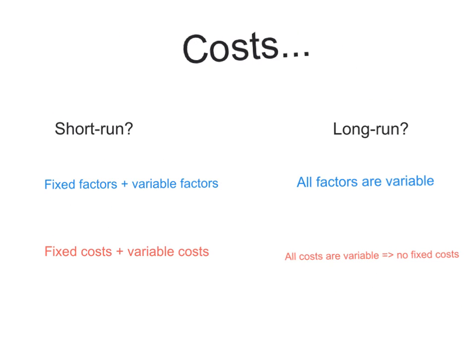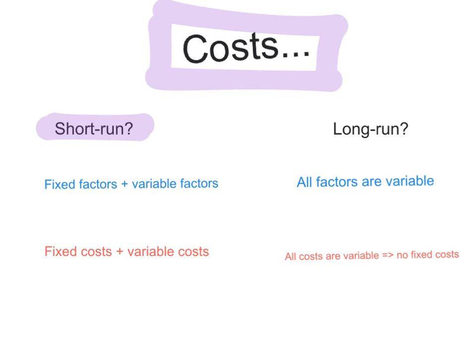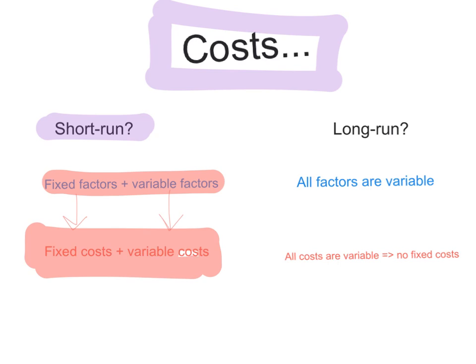Let's start with a very quick recap of costs of production. In the short-run, there are fixed factors and variable factors. This means that because there are fixed factors, there will be fixed costs, and because there are variable factors, there will be variable costs. So in the short-run, firms have both fixed costs and variable costs.